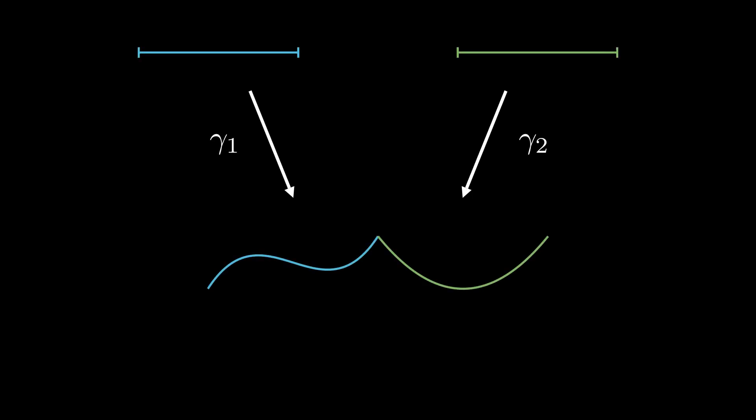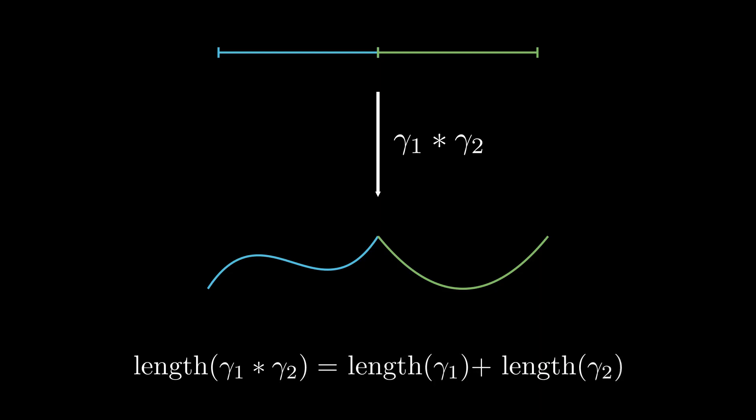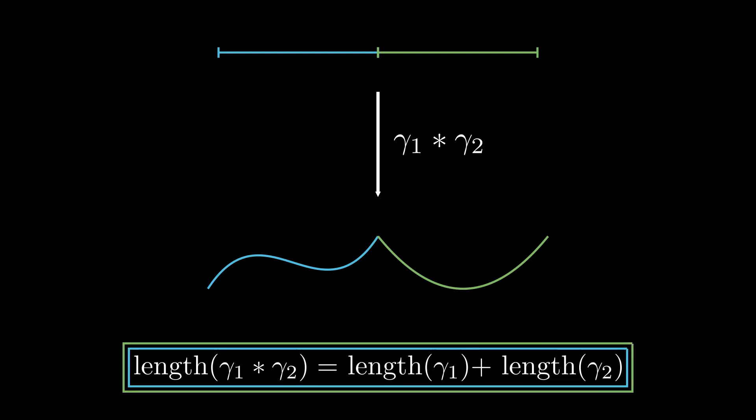Another basic property is obtained when we look at the concatenation of two curves. Just like we expect, the length of a concatenation γ₁ * γ₂ equals to the sum of the lengths of γ₁ and γ₂.